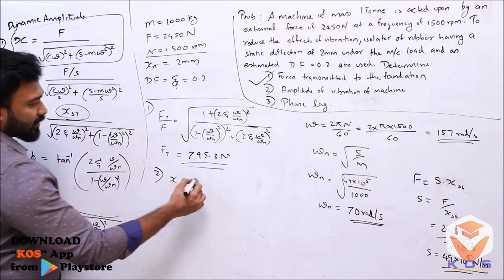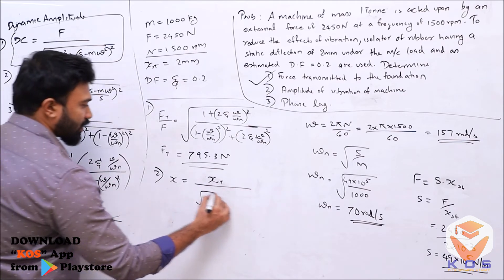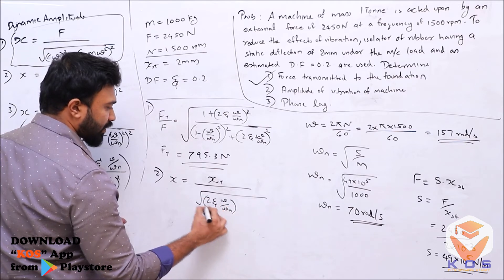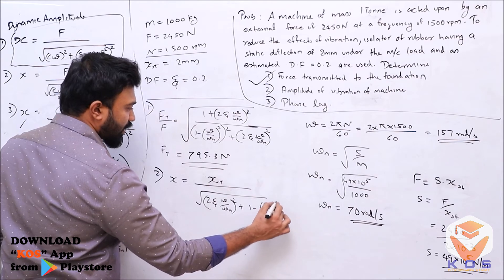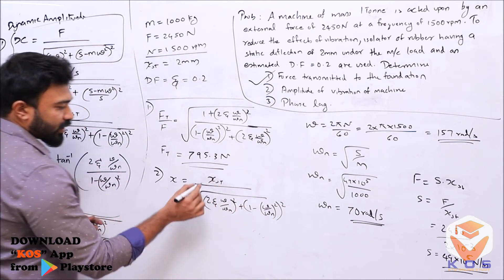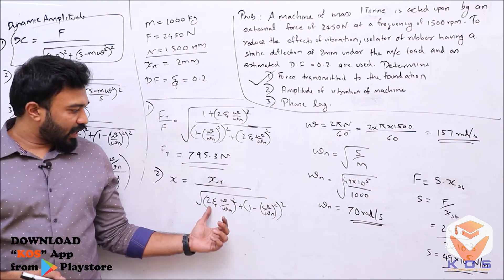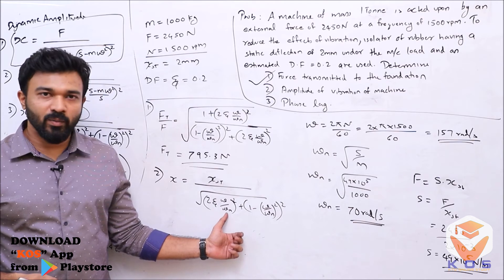So x_st, that is x_st divided by square root of [(2*zeta*omega/omega_n)^2 + (1 - (omega/omega_n)^2)^2]. Now in the equation, x_st value is 2×10^-3, zeta = 0.2, omega and omega_n values we have.